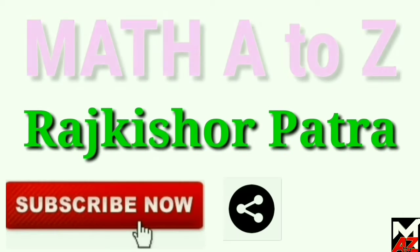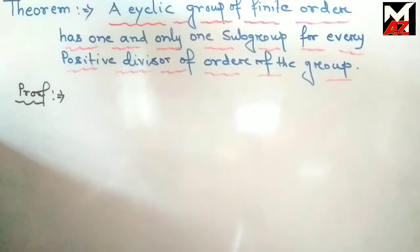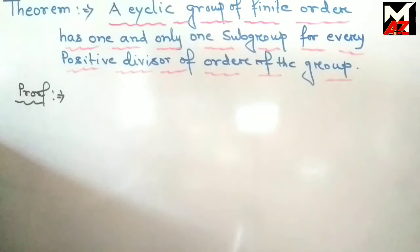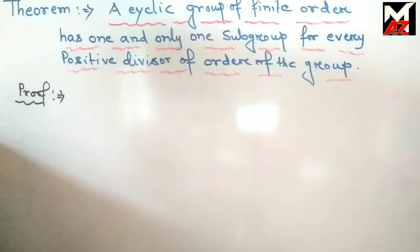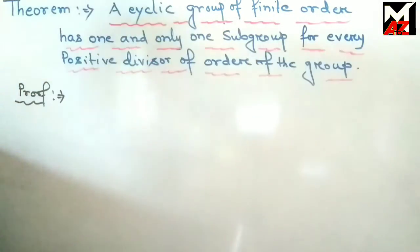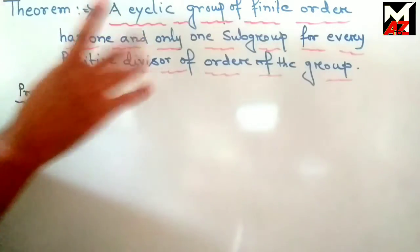Hi friend, welcome all to my educational channel Math A to Z. This is the last class of cyclic group, and in this class we state an important theorem of cyclic group together with its proof, and three examples from a very popular book of higher algebra to clearly explain the uses of the theorem. The theorem of this class is: a cyclic group of finite order has one and only one subgroup for every positive divisor of the order of the group.